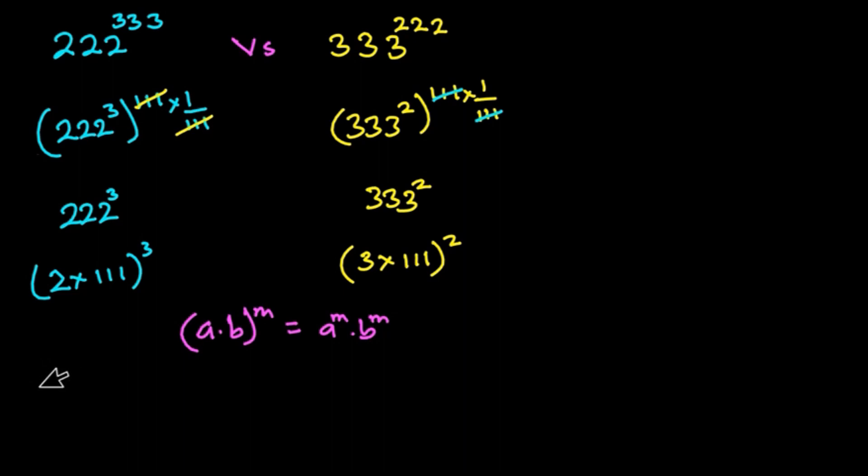So we have 2 to the power 3 times 111 to the power 3, and then here we have 3 to the power 2 times 111 to the power 2.